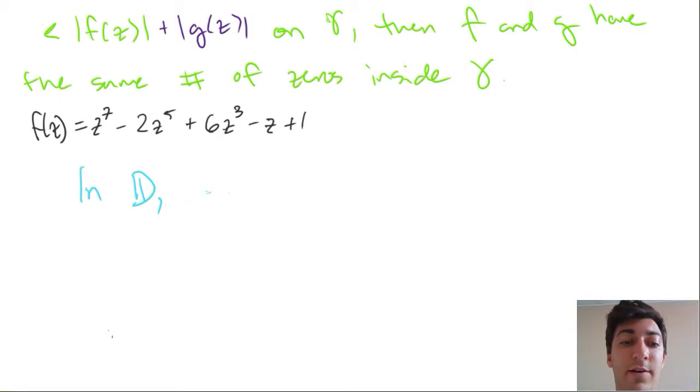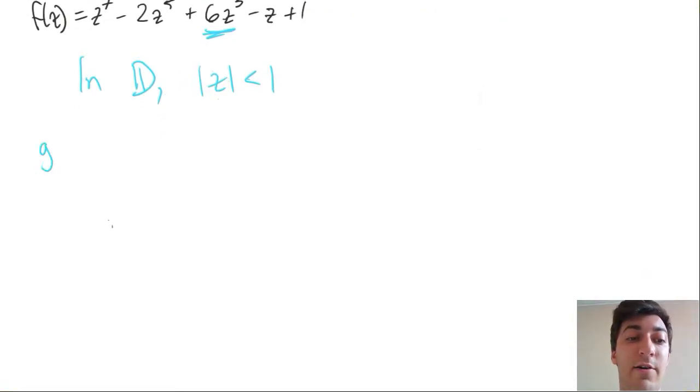And so we know that in the unit disk, all the z in there, all the values in the unit disk have modulus strictly less than one. So this power to the seven is really not going to be adding much value to f in terms of moduli. So really, what's being dominated, or what is dominating here is going to be the coefficients. So namely, we might think, we might take an educated guess, and think that this 6z³ term is going to add the most value to the modulus of f. So maybe a choice for our g value is going to be 6z³.